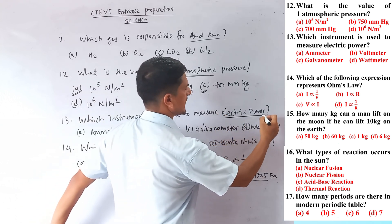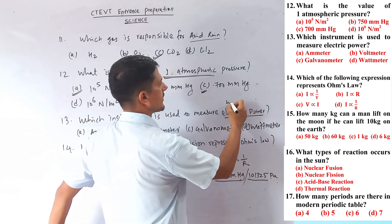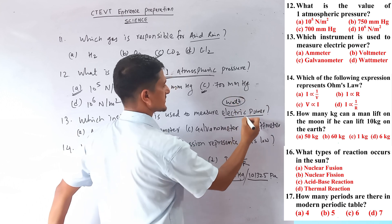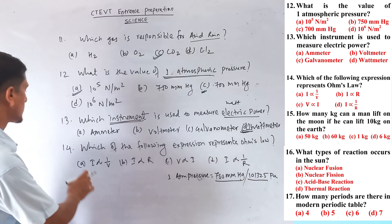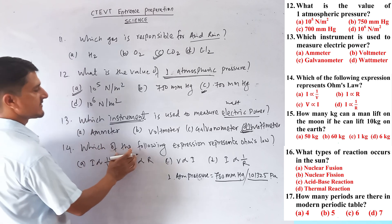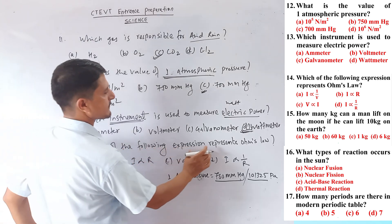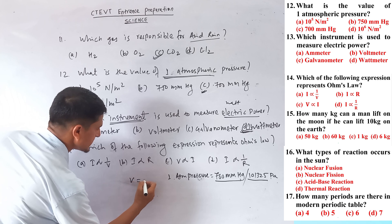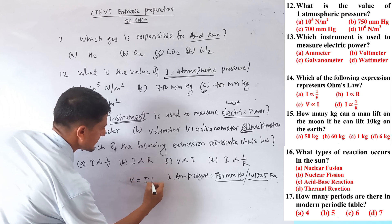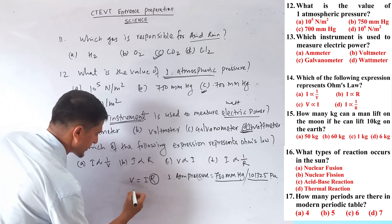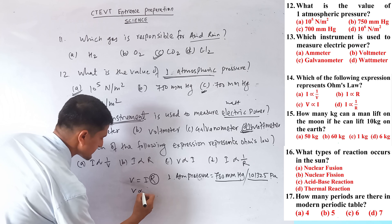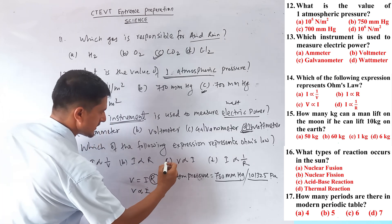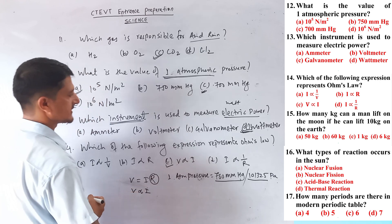Question number thirteen: which instrument is used to measure electric power? Electric power is measured in watts, and the correct instrument is a wattmeter. Question number fourteen: which expression represents Ohm's law? Ohm's law formula is V = IR, where R is constant resistance, so V is proportional to I. Option C is the correct answer.